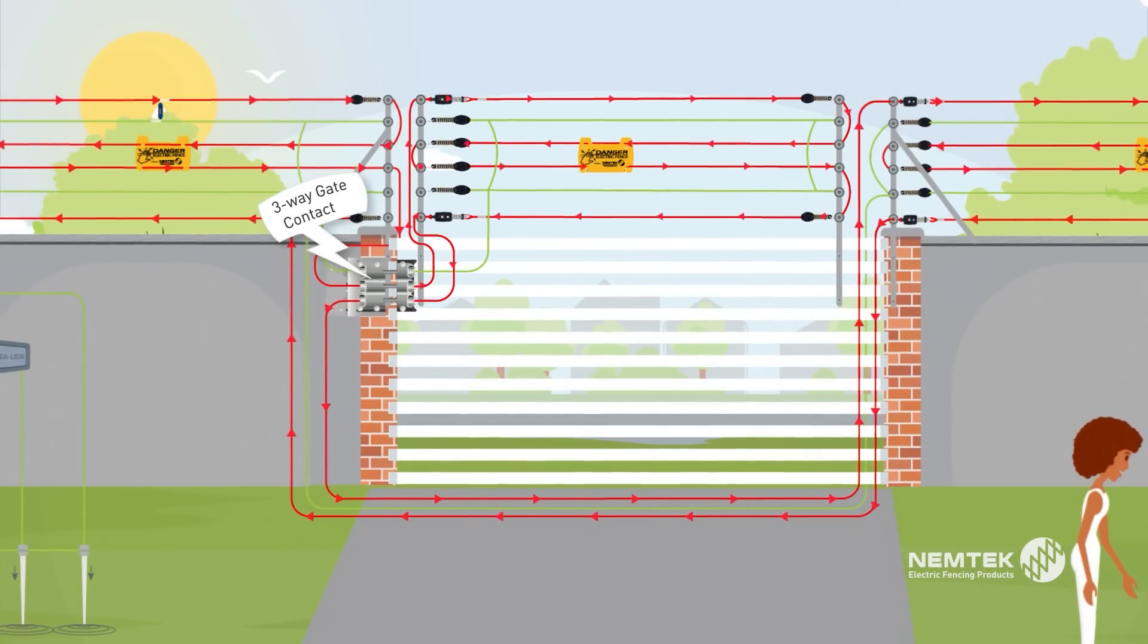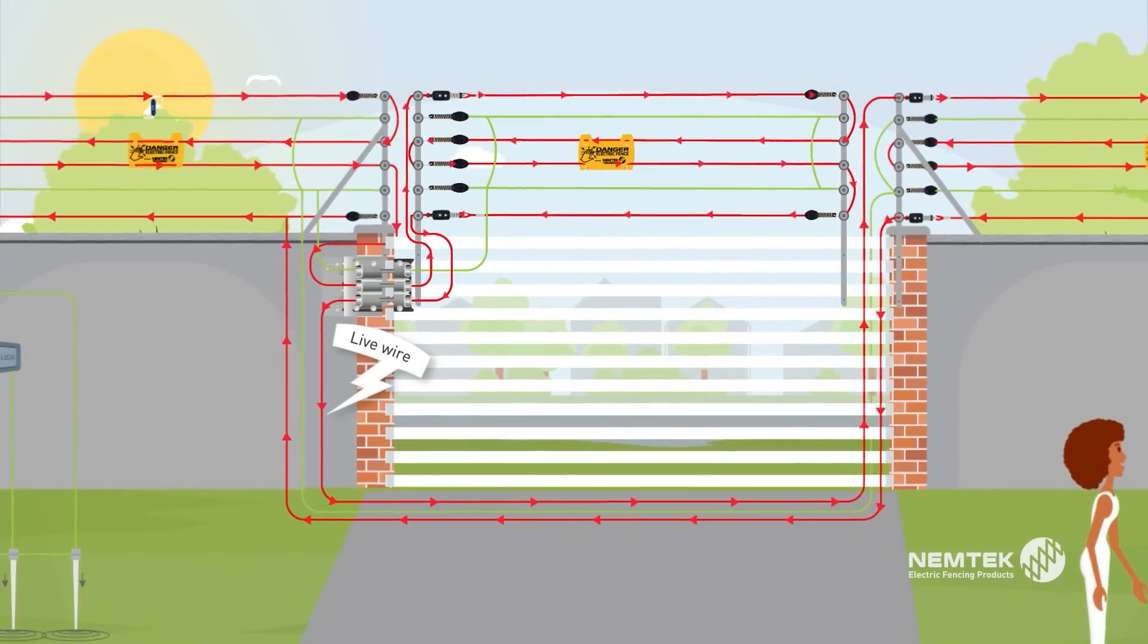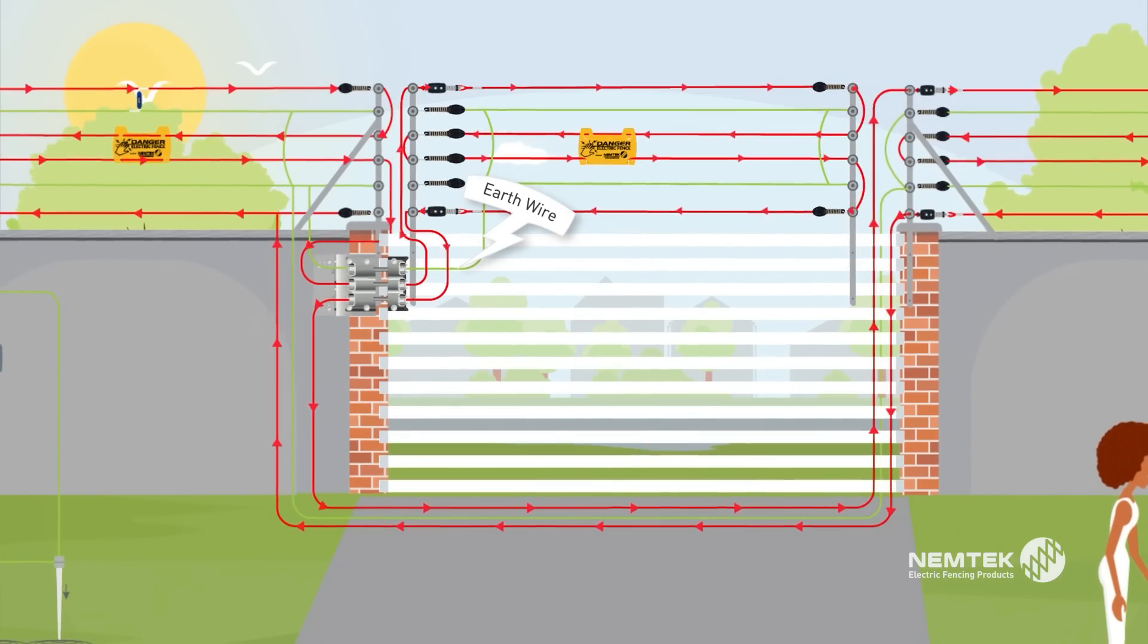The three-way gate contact is used for wiring live wires in series onto sliding gates. The third contact introduces the earth wire into the gate system.